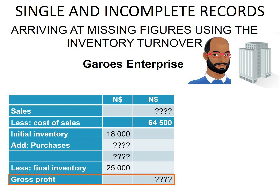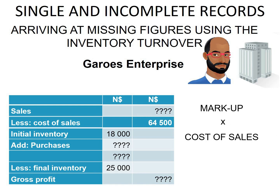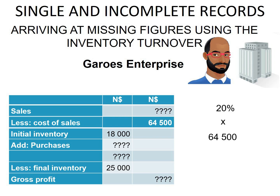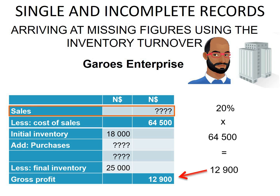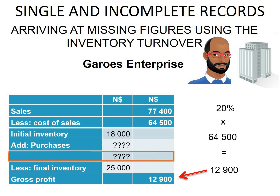Next we calculate gross profit by multiplying the markup by the cost of sales. Our markup is 20% and our cost of sales is 64,500, so 20% of 64,500 gives us a gross profit of 12,900. For sales, we add 64,500 and 12,900 — just as in previous examples — to get 77,400.